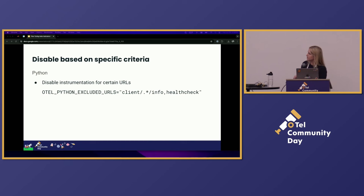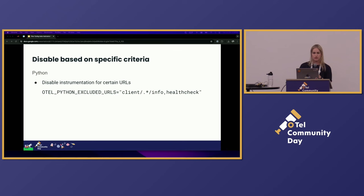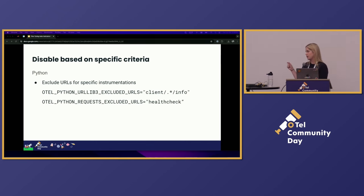For Python, we have a similar thing where you can disable instrumentation for certain URLs — pretty similar to the JavaScript approach, where you say you don't want health checks or specific paths instrumented. Python has also gone a little further: depending on how many different instrumentation libraries you're using, you can say for these specific instrumentation libraries, ignore these spans or exclude these URLs.